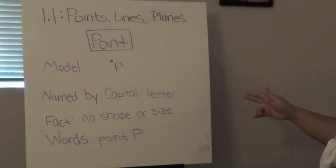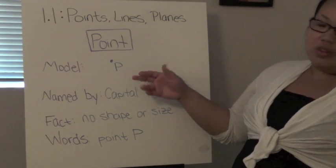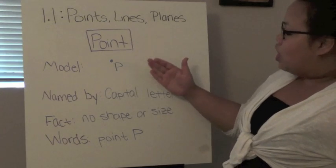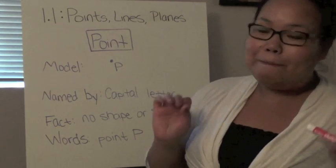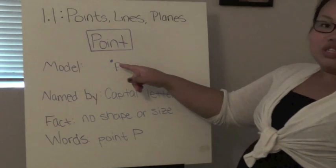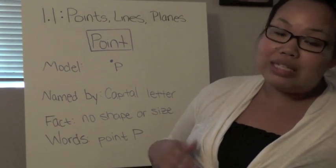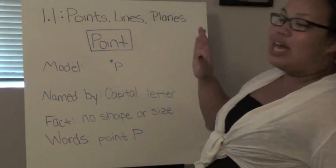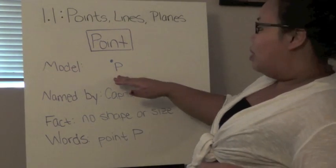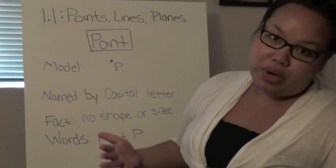So the first one we're discussing is point, which you should have written down. Now how you write a point is very simple, it's just a dot. Now this dot has no shape or size, this means it cannot be measured. Even though it looks like this and I probably can put a ruler up to it, the definition of a point is that there's no measurement. So the way we name this is by a capital letter. So any capital letter in print will do, this one I still named P, but it doesn't mean all points are labeled P.